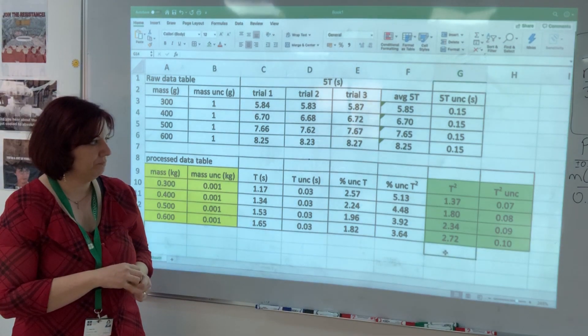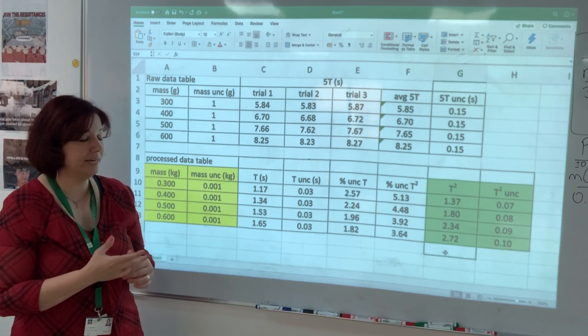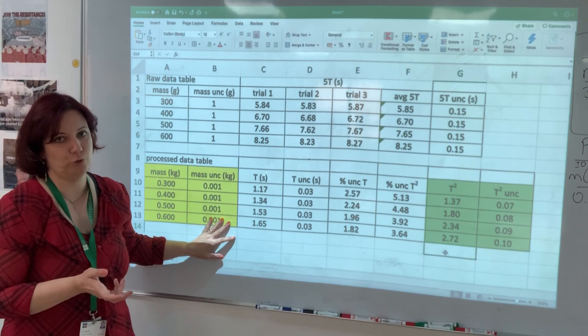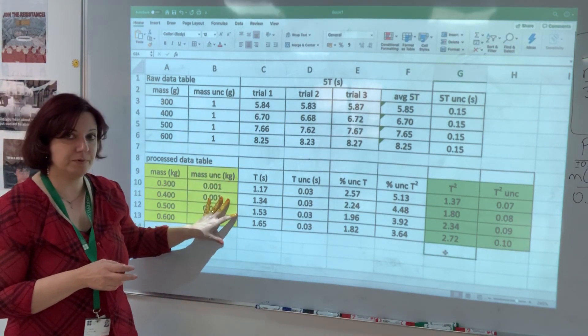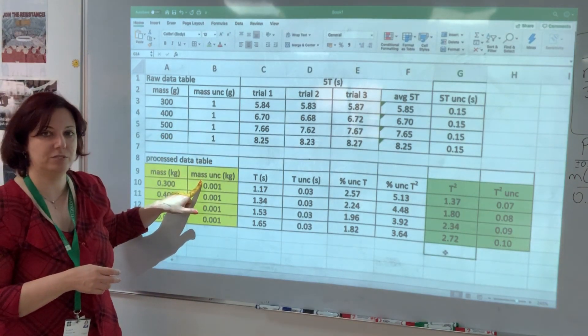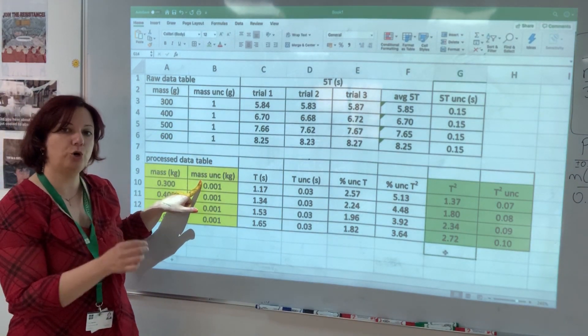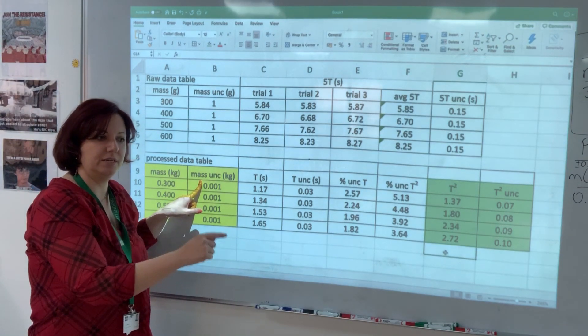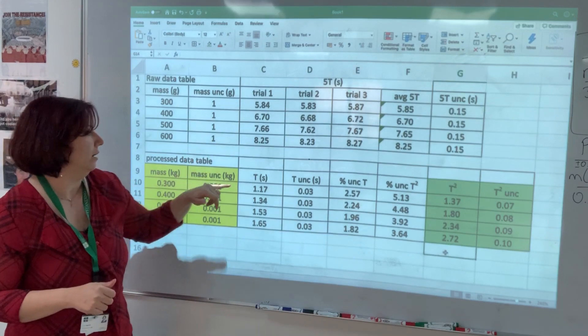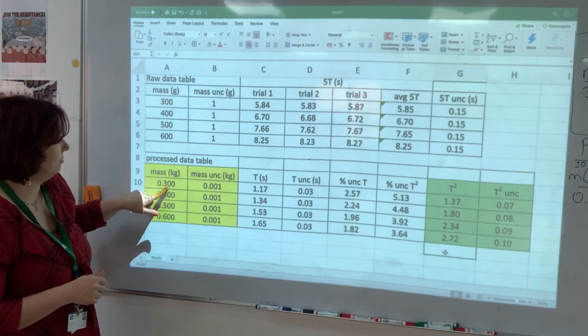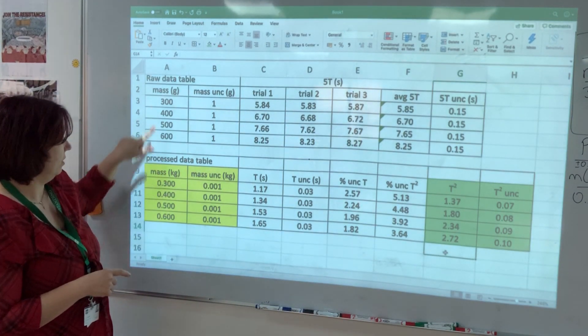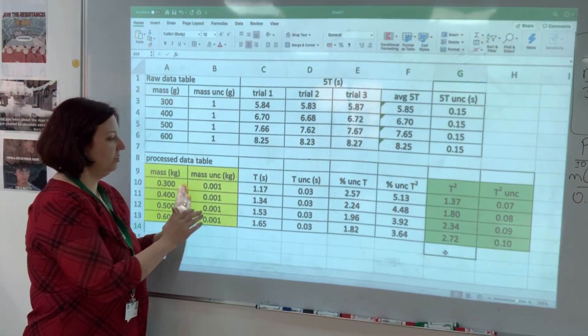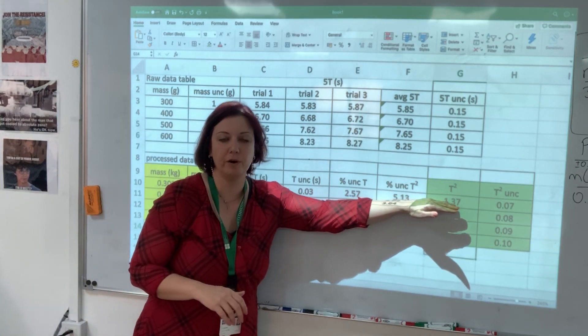Just a note about one thing. When you present a lab report, tables aren't the only processing you're going to show, obviously. Yes, these must be there, but in between the raw table and the process table, you must show an example of every kind of processing that you are doing, including how to calculate mass in kilograms. Pick one row and show a calculation that shows where each one of these numbers come from.